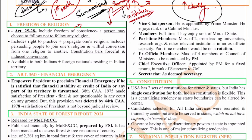Freedom of religion is covered under Articles 25 to 28. It includes freedom of conscience and a person has the freedom to choose whichever religion they want to follow. It includes the right to practice, the right to propagate one's religion, persuading people to join one's religion, and willful conversion from one religion to another. An important thing to note is that the constitution bars forceful and induced conversion, but it allows everyone to follow the religion of their choice.